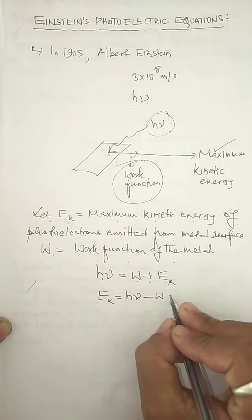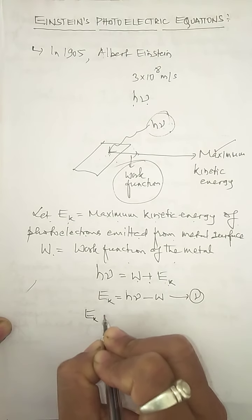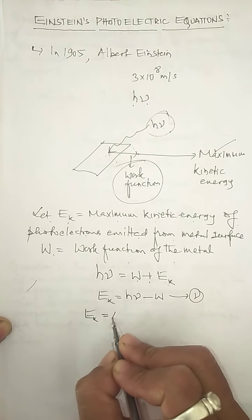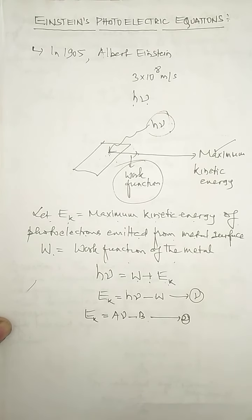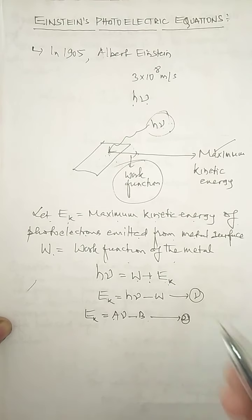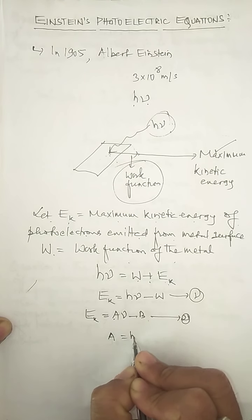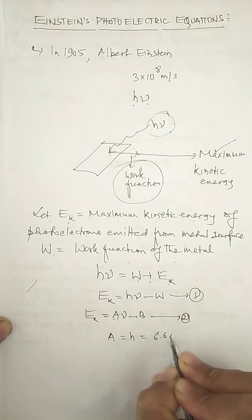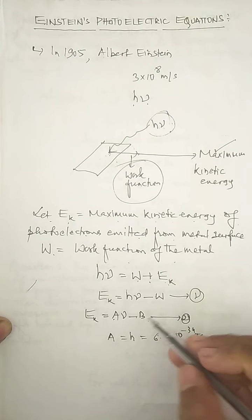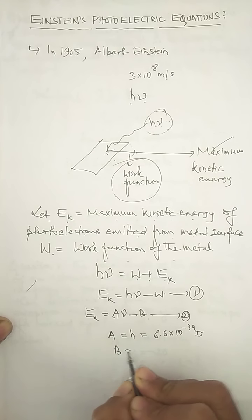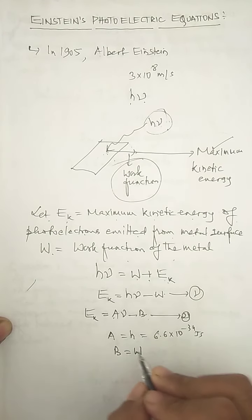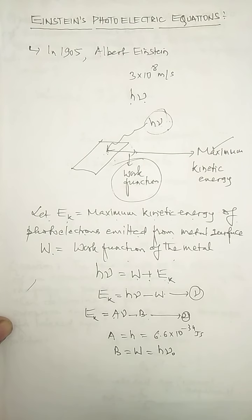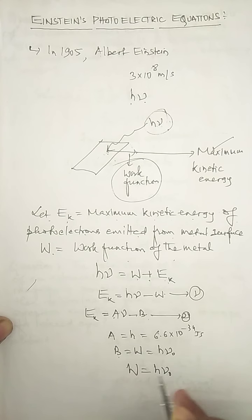We can compare this equation with the equation formed by Hertz and Lenard, which was Ek = aν − b. Comparing the two equations, we can clearly see that 'a', which was a universal constant according to Hertz and Lenard, is actually nothing but h — Planck's constant — with value 6.6×10⁻³⁴ joule-seconds. And 'b' equals W, the work function of the metal. So we can write: work function W = hν₀.